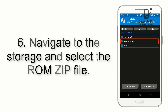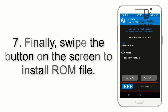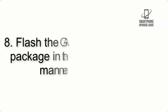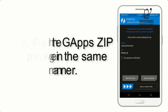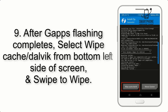Step 5: Go back to the recovery main screen and tap on the Install button. Step 6: Navigate to the storage and select the ROM zip file. Step 7: Finally, swipe the button on the screen to install the ROM file.